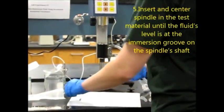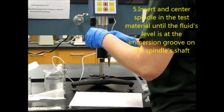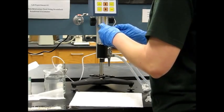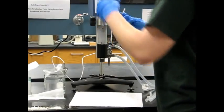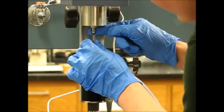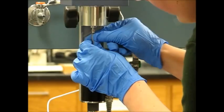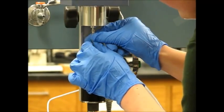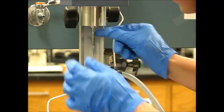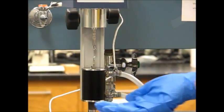Then we're going to take our spindle and slowly place it in the sample container. Then we're going to attach our spindle to the viscometer, tightening in a clockwise motion. Make sure that your spindle is fully submerged in the polymer solution before continuing.